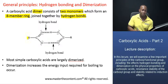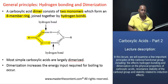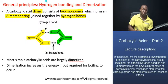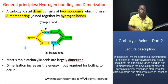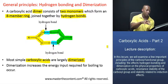So as you can see in this case, we have one acid right there, and we have yet another acid right there. And those two are joined together by two hydrogen bonds. In actual fact, most simple carboxylic acids are largely dimerized — so they exist for the most part in that form.